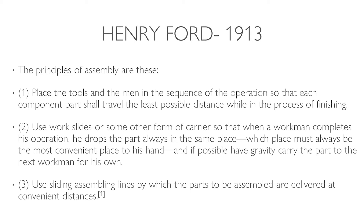Using sliding assembly lines, parts to be assembled could be delivered at convenient distances. People would be positioned along an assembly line in a staggered fashion such that when the item to be assembled arrived to them, they were ready to perform the sequence of events needed to complete their task. As a car would be manufactured, it would move down a line and be assembled piece by piece in a repetitive and sequential fashion.